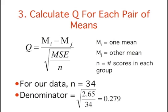Third, calculate the studentized t, also known as Q, for each pair of means. In this equation, M sub i is one mean, M sub j is the other mean, and n is the number of scores in each group. For these data, there are 34 observations per group, so our n is 34. The value in the denominator is the square root of the mean square error, 2.65, divided by 34, which equals 0.279.